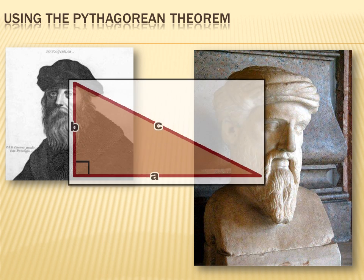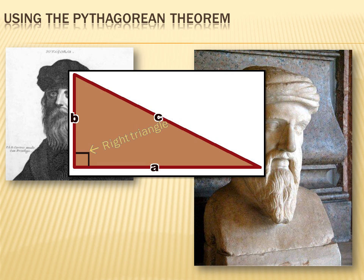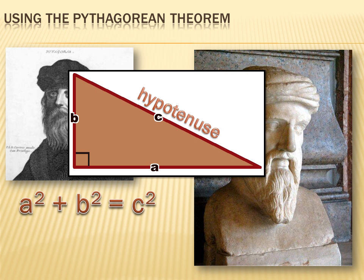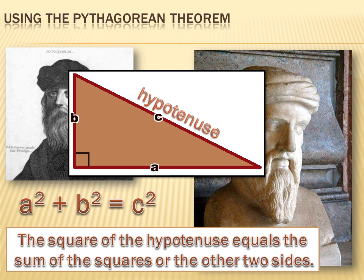The Pythagorean theorem relates to a right triangle. We know this is a right triangle because one of the angles is 90 degrees, and we call the side opposite that 90-degree angle the hypotenuse. Pythagoras said that the square of one side plus the square of the other side equals the square of the hypotenuse — stated as: a squared plus b squared equals c squared — in a right triangle.